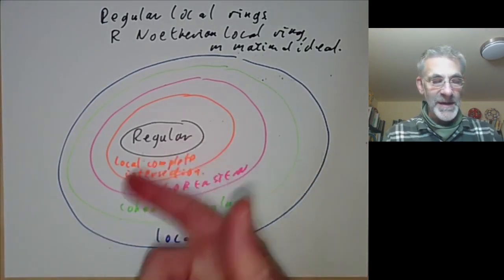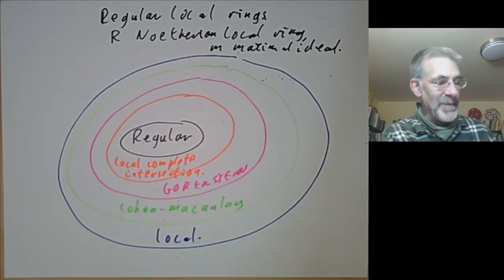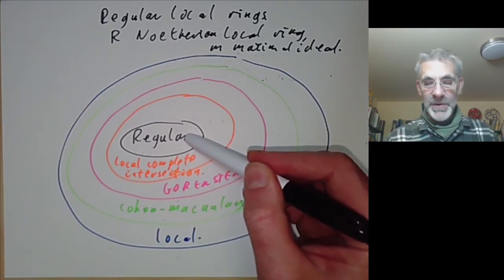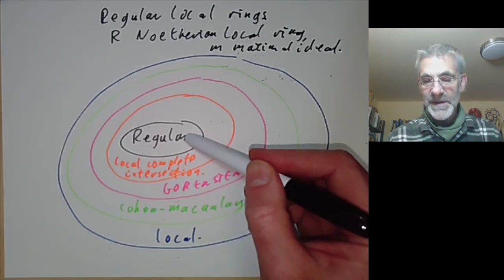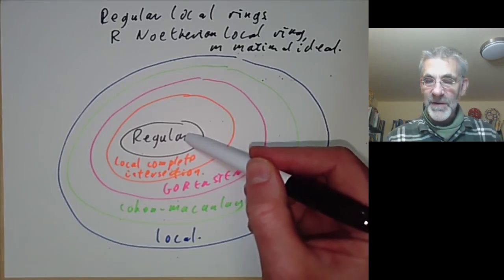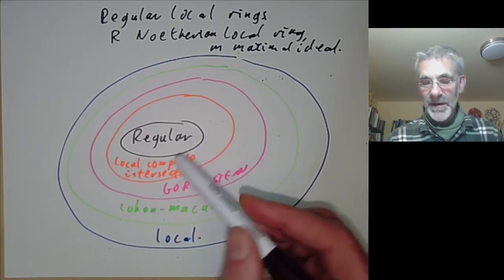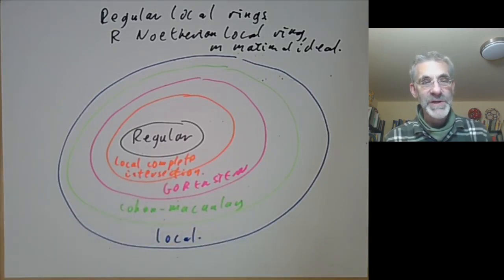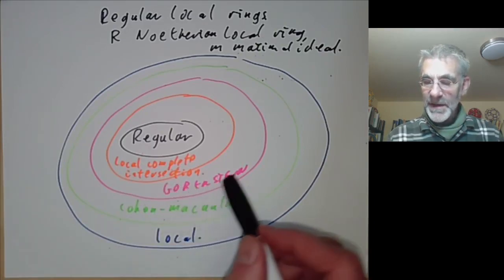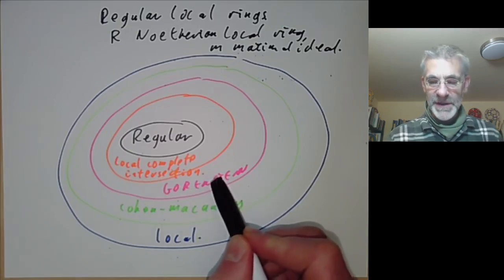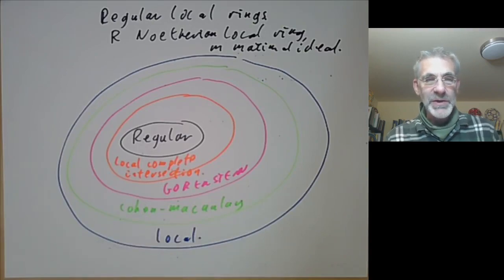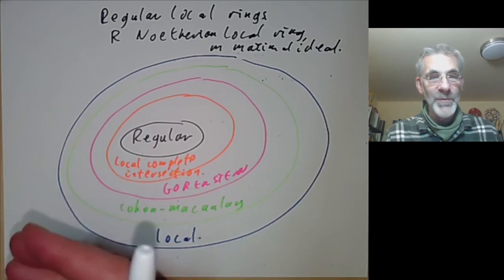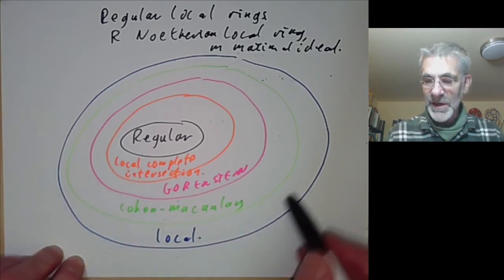What we're going to do over the next few lectures is give some examples of each of these sorts of rings and explain why they might be interesting. Very informally, regular local rings are the ones that correspond to non-singular points of manifolds or varieties. A local ring tells you something about an algebraic variety near a point, so these correspond to saying the point is non-singular. Local complete intersection corresponds roughly to saying that your variety is defined by the minimum possible number of equations. Gorenstein rings are those that have nice duality properties. Cohen-Macaulay rings have something to do with not mixing bits of different dimension — a typical example of a ring that isn't Cohen-Macaulay is a union of a line and a plane, where you're mixing things of two different dimensions.